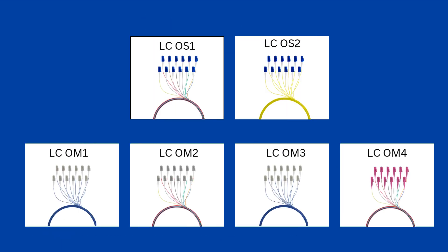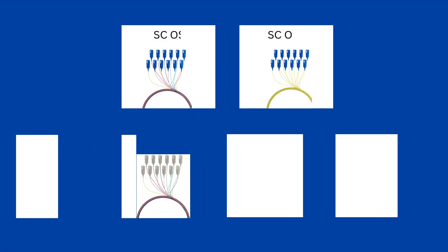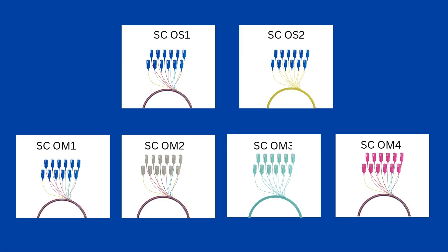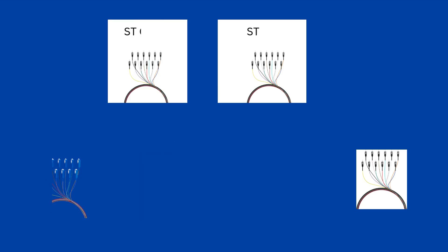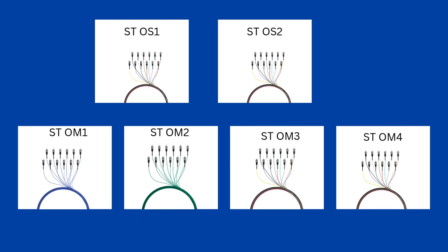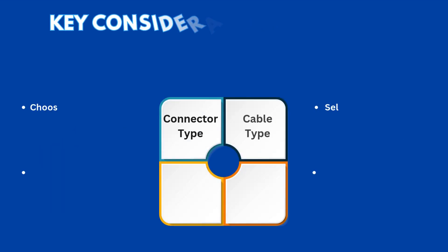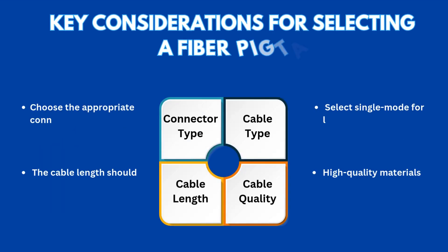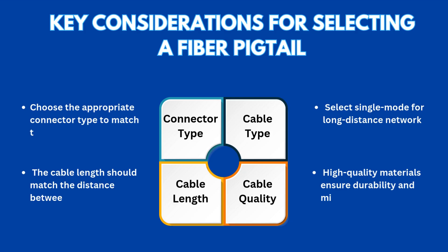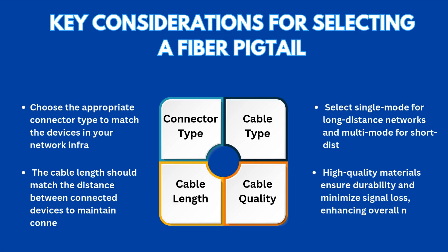Fiber optic pigtails are categorized by fiber type — single-mode or multi-mode — and connector type such as SC, LC, ST, etc., with common examples including SC-APC, FC-APC, and MU-UPC pigtails. Key considerations for selecting a fiber pigtail include connector type, cable type, cable length, and cable quality.